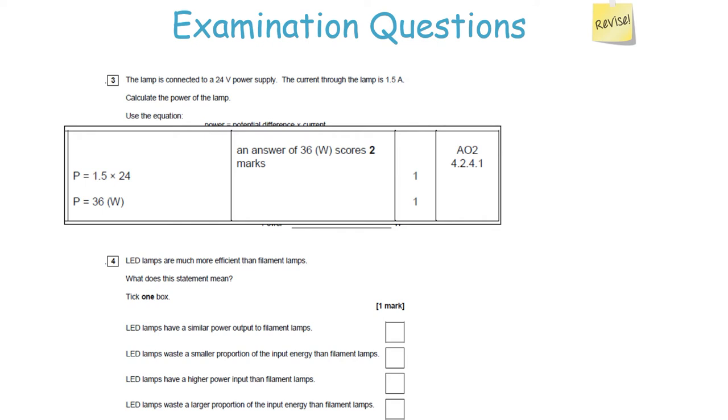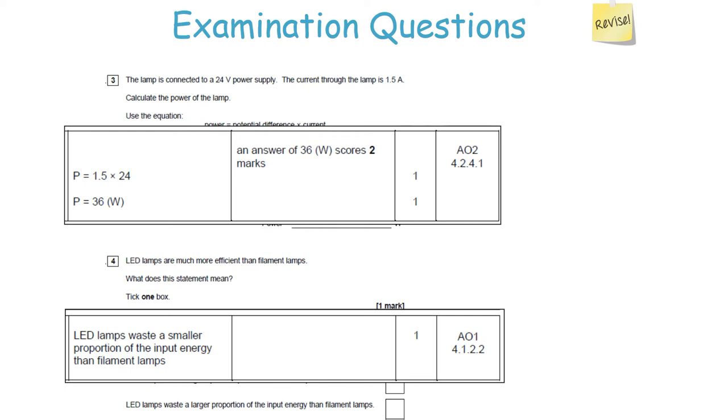Efficiency means the proportion of useful output energy compared to the total input. Since LED lamps are much more efficient, they have a lot more useful output and a lot less wasted output. The answer is: LED lamps waste a smaller proportion of the input energy than filament lamps.